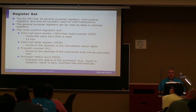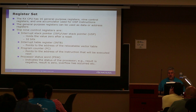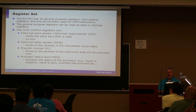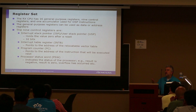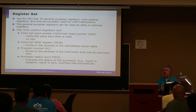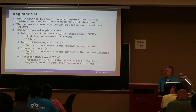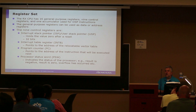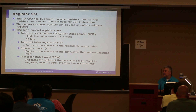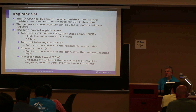We have 16 general purpose registers and nine control registers. The general purpose registers can be used as data or address. In this particular class, we're not going to go into great detail on registers — that's something I go into a lot more detail in another course. Nowadays, even though it's good to understand assembly language instructions, not too many companies are actually developing code using assembly language.